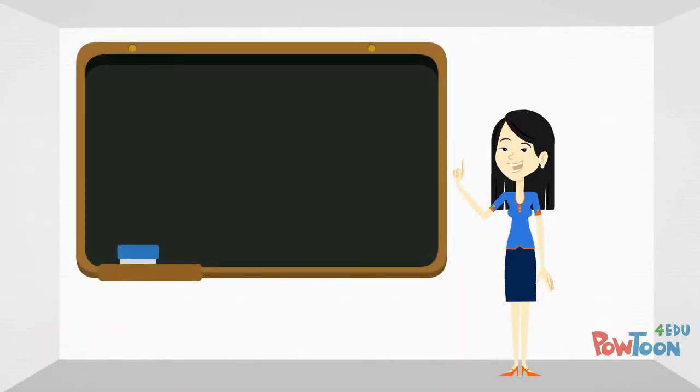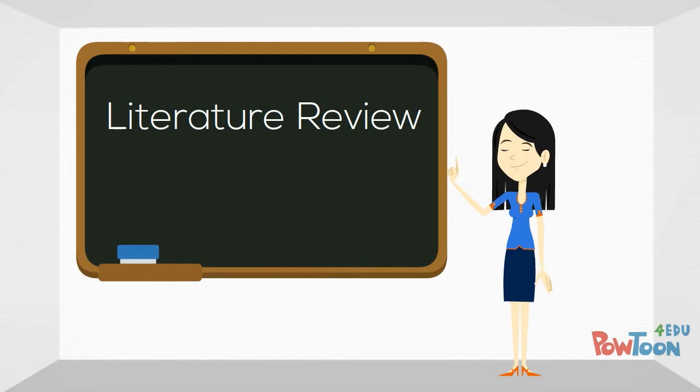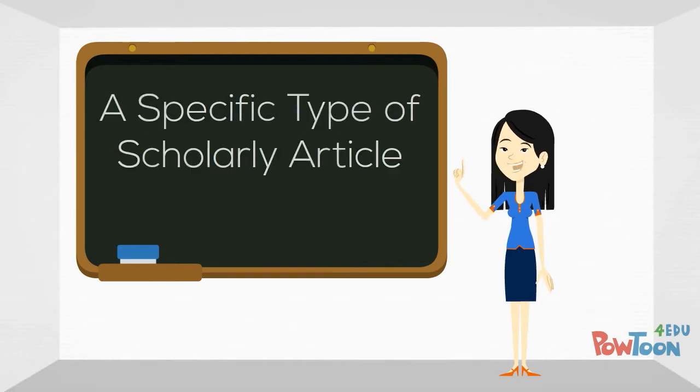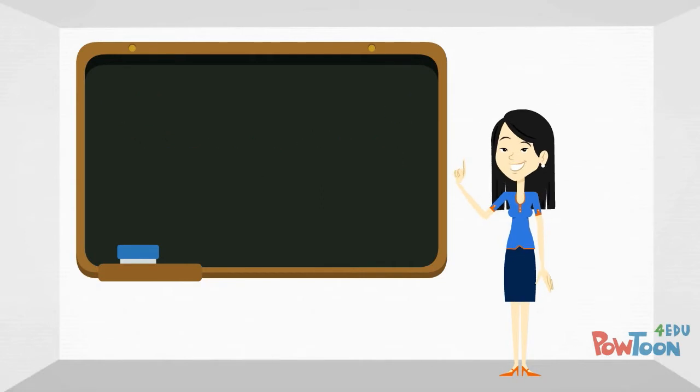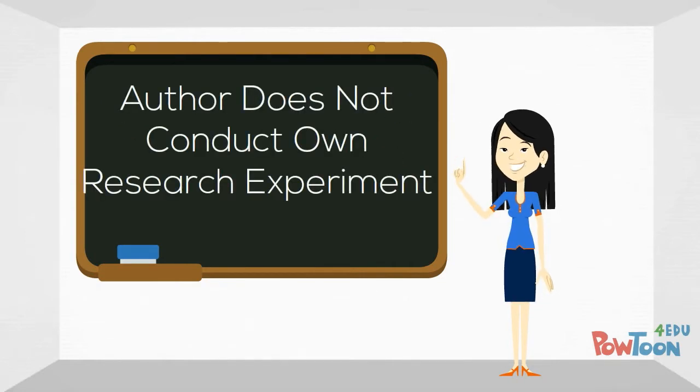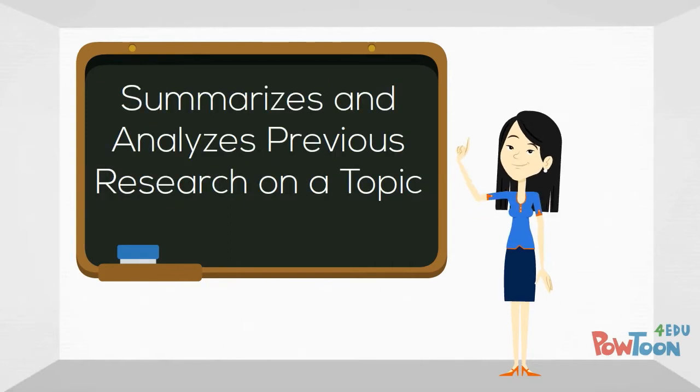Jeff also learned that in some cases, the term 'literature review' is used to refer to a specific type of scholarly article. In a literature review article, the author does not conduct their own research study. Instead, the author summarizes and analyzes previous research on the topic.